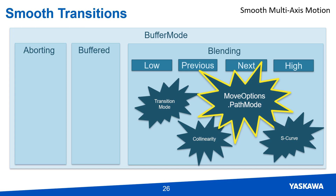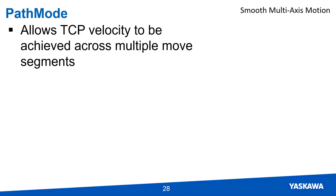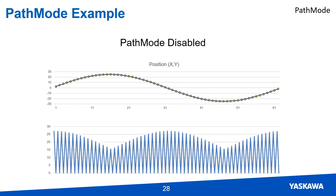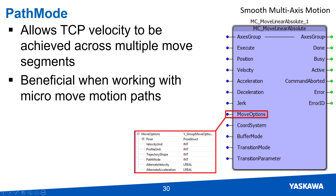Path mode relies on segments being collinear to perform its function. It is a feature that allows many micro segments to occur without requiring high acceleration to get to the specified velocity. With path mode disabled, the velocity needs to be reached for every point, requiring higher acceleration and making the motion choppy. When path mode is enabled, the first couple of segments defined by the mechanism acceleration rate are used to accelerate the TCP head to the required velocity, which is held through the other motion segments. Path mode will also decelerate over multiple points when a non-collinear segment is encountered. These segments must be collinear for path mode to accelerate through. Path mode is part of the move options input on all group motion function blocks, allowing the controller to look ahead at upcoming segments to smoothly accelerate to the required velocity.